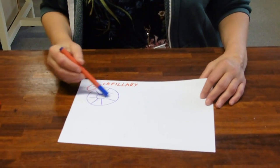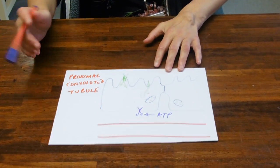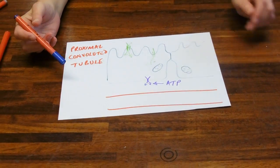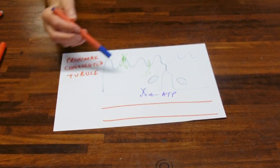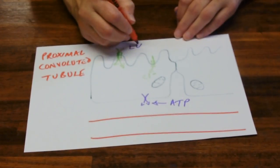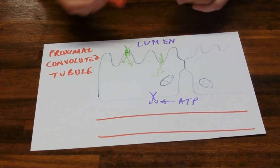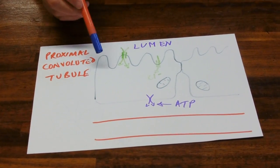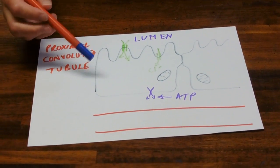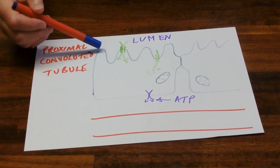If we sort of zoomed into one or two of these cells, we can see that they've got features that are going to help to absorb stuff. So the lumen is up here. This is the lumen where we've got our filtrate passing through.